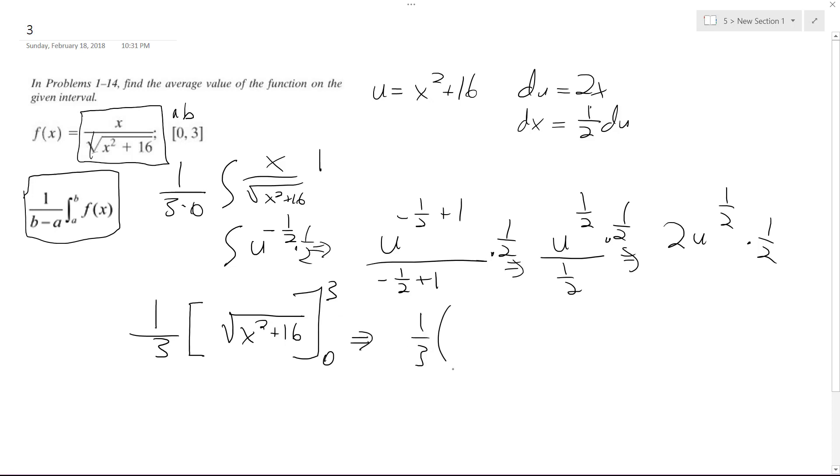So we get 1 third, and we get quantity square root of 3 squared - so 9 plus 16, so that works out nice - minus square root of 0 plus 16, so just 16. So what we end up with is 1 third of, 9 plus 16 is 25, square root of 25 is 5, minus 4.